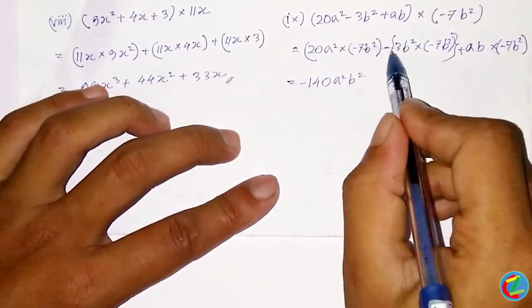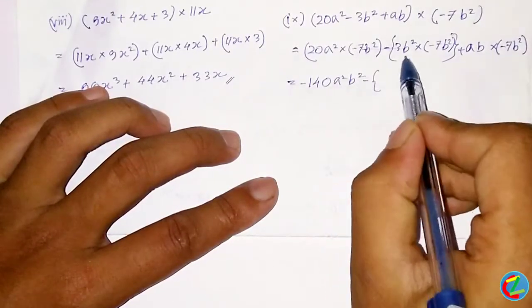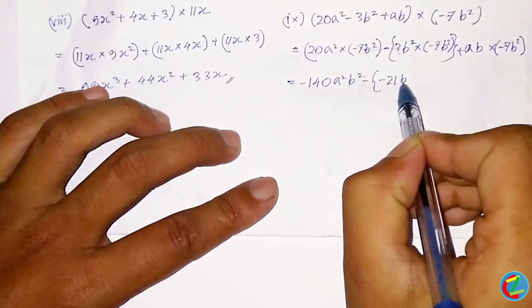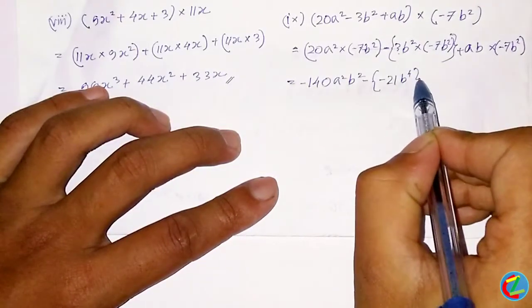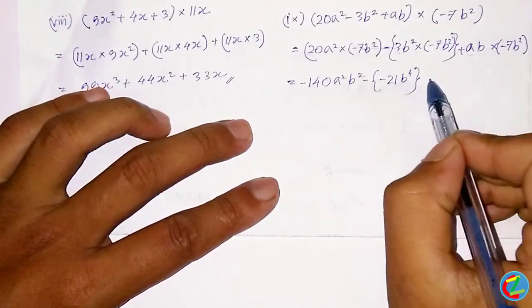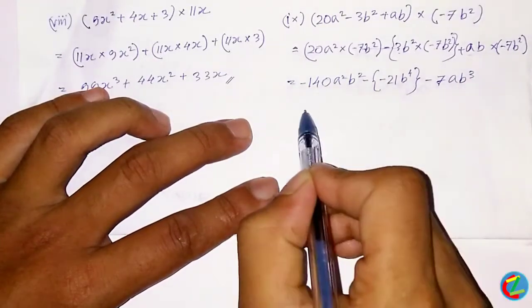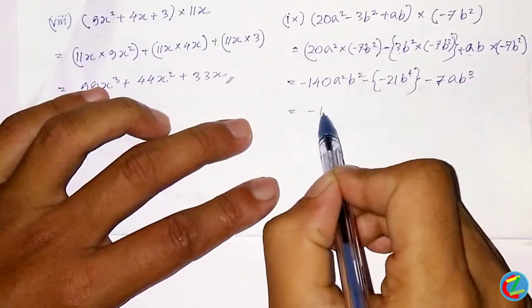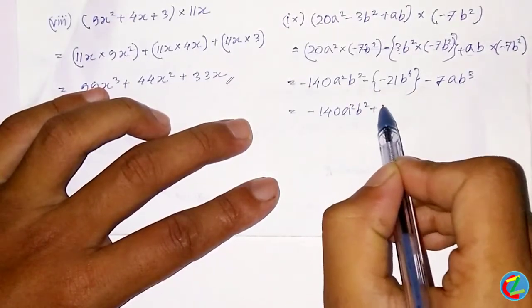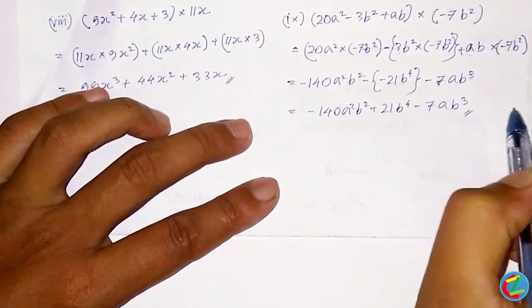2ab into minus 7b squared equals minus 14ab cubed. For b squared we get the y cubed z plus 2 minus 7.